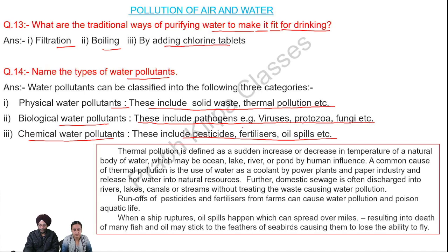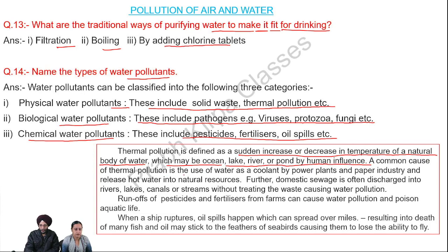The question arises: what is thermal pollution? Thermal pollution is defined as a sudden increase or decrease in the temperature of a natural body of water — which may be an ocean, lake, river, or pond — by human influence. A common cause of thermal pollution is the use of water as a coolant by power plants, the paper industry, and other industries, which release hot water back into water bodies.